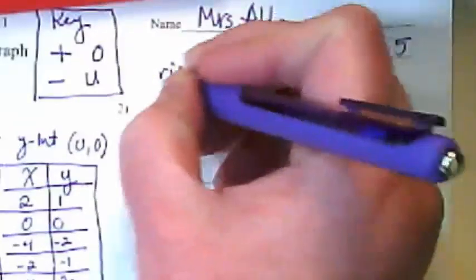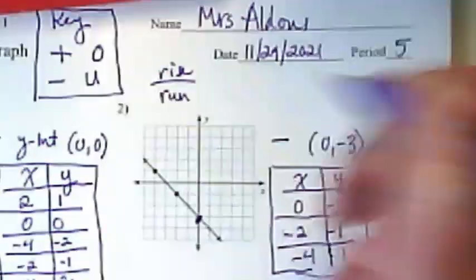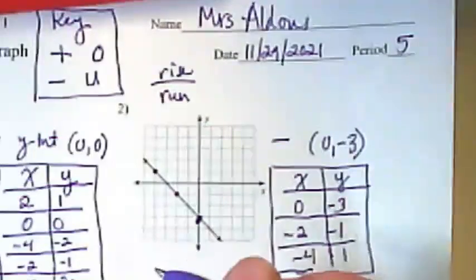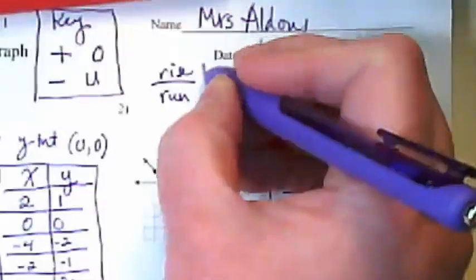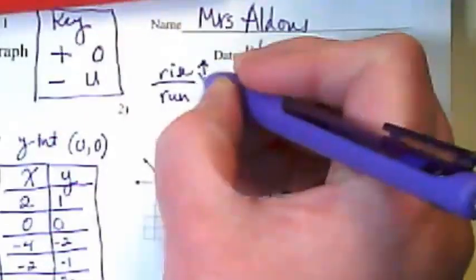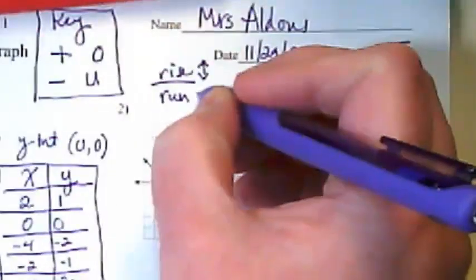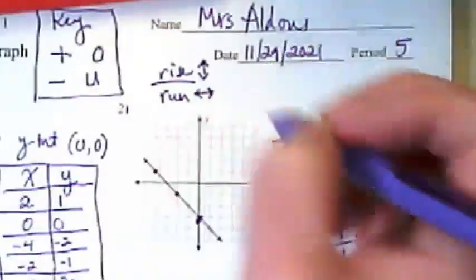We've talked a little bit about how slope is known as rise over run, and that's just really a shortcut to talk about the upper number in the fraction goes up or down on the graph, and the lower number goes left or right.